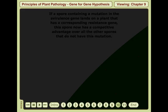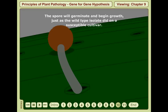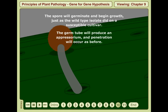The spore will germinate and begin growth just as the wild-type isolate did on a susceptible cultivar. The germ tube will produce an appressorium and penetration will occur as before.